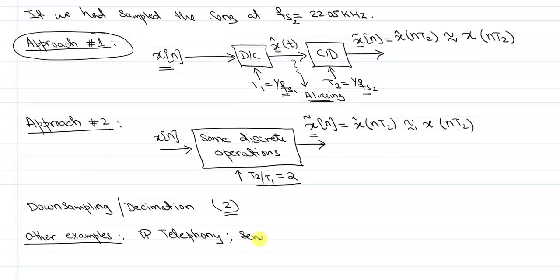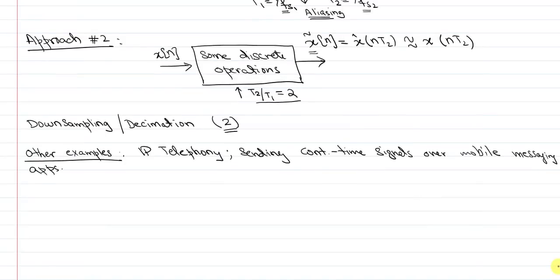Similarly, sending continuous time signals over mobile messaging apps. If you use any messaging app, you are sending them over a cellular link, you don't want to consume that much data. So many of those mobile apps actually downsample your signal and then send it over. There are many other uses of downsampling.